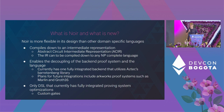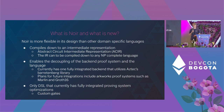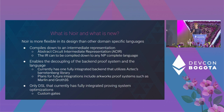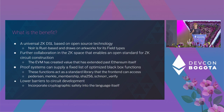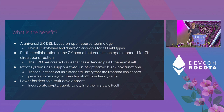To our knowledge, this is the only DSL that currently has fully integrated proving system optimizations — not just an interface for language system optimizations, but on the proving system as well. Different use cases require different kinds of systems, and now we have a language that separates the front-end, middle-end, and back-end, so developers can converge on a common architecture standard. This enables the addition of optimized black-box functions.